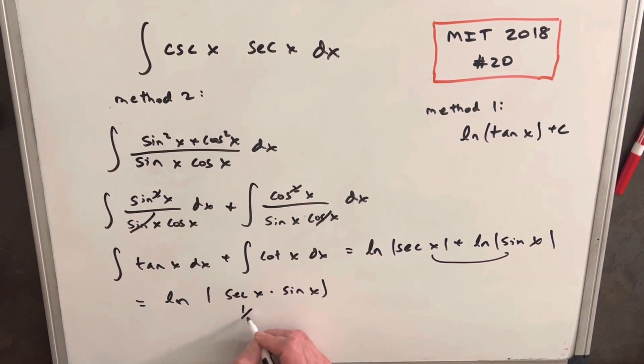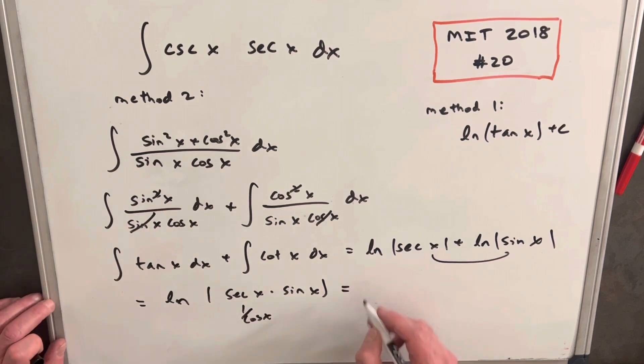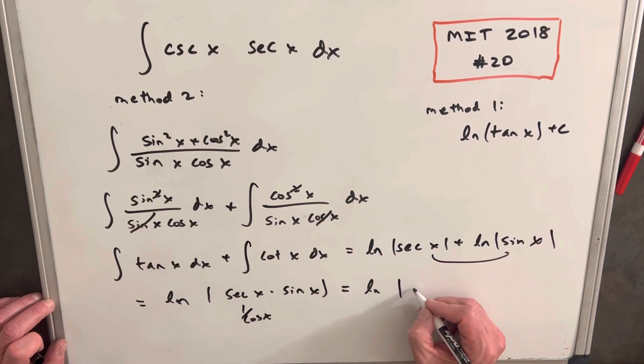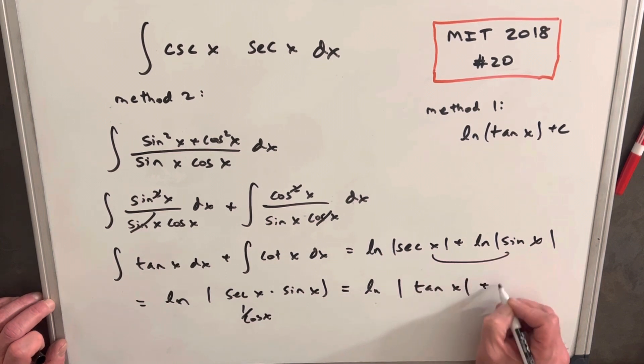So we'll have ln times secant x times sine x. But secant is just 1 over cosine. So then when we multiply this together, we get back ln tan x plus c.